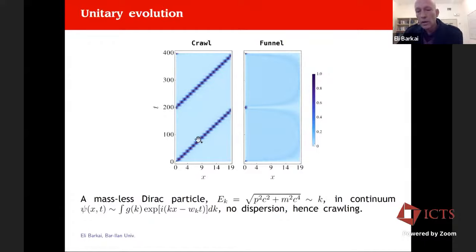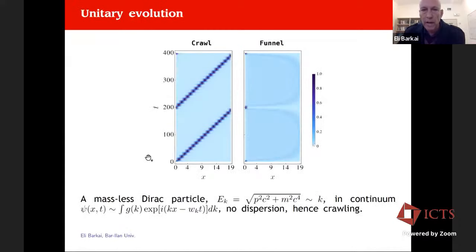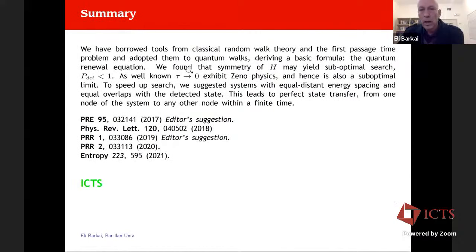The massless Dirac dispersion omega_k proportional to k means no widening of the wave packet — it propagates like a delta function. No dispersion is good for search: when you measure, you detect the particle with probability one, and it transfers from one point to another. The physics is based on Schrödinger dynamics, but we engineer it to effectively mimic a massless Dirac particle. The crawl model breaks time-reversal symmetry: taking the complex conjugate of the Hamiltonian reverses the direction of motion, giving the 'antiparticle' direction, while the funnel model has no time-reversal symmetry.